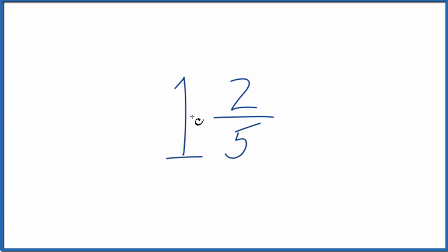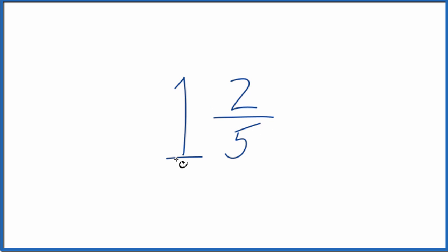If you need to write the mixed number 1 and 2 fifths as an improper fraction, here's how you do it. So first off, 1 and 2 fifths — this is a mixed number. We have the whole number 1 and then the fraction 2 fifths.